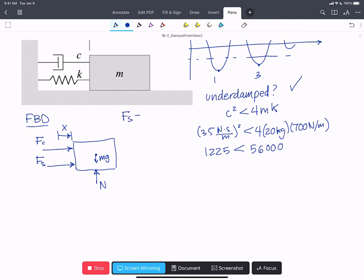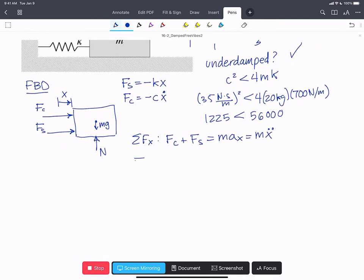But what I'll do is I'll assign them as negative. So Fs equals minus kx and Fc is minus c x dot. So we can write our equation of motion, sum of forces in x. We'll have Fc plus Fs equals max, which equals mx double dot. If we plug in those forces, we get minus c x dot minus kx equals mx double dot.